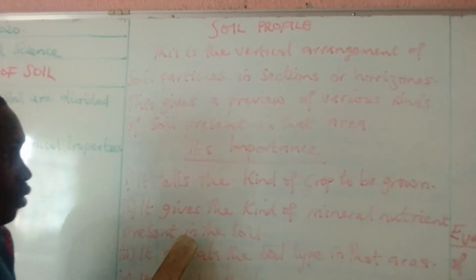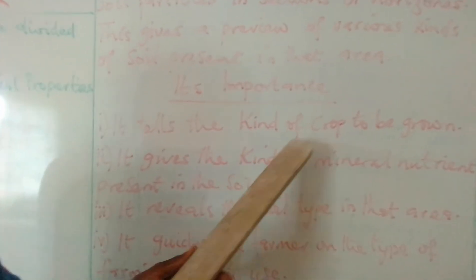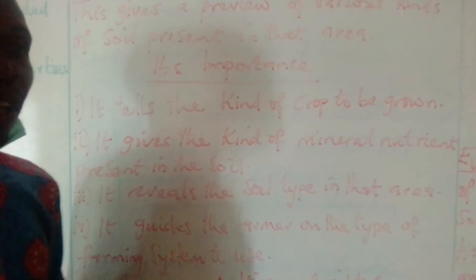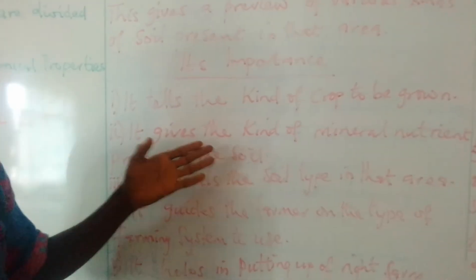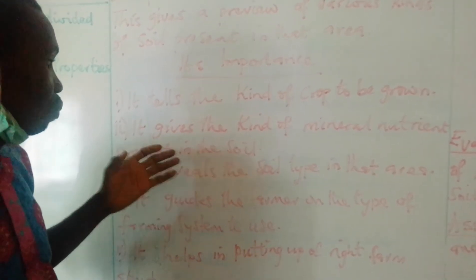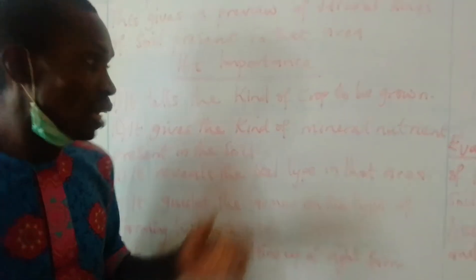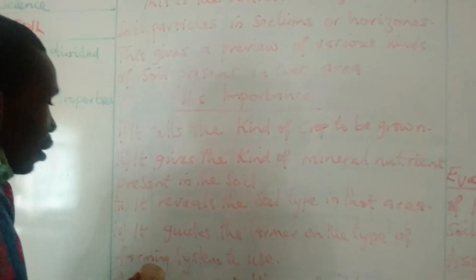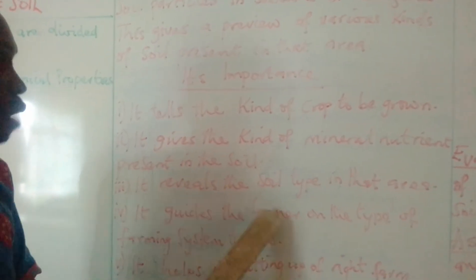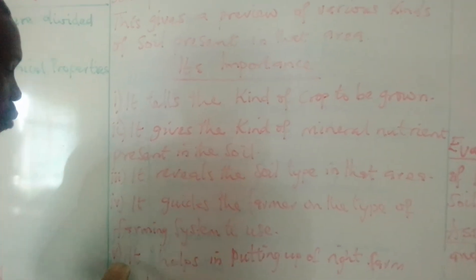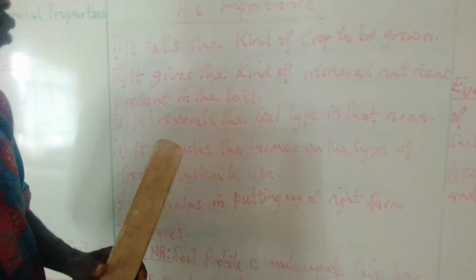What is important about soil profile? It tells you the kind of crop that should grow on a particular piece of land. It also gives you the kind of mineral nutrients present in the soil. It will tell you the soil type in that area. Number four, it guides a farmer on the type of farming system to use. And number five, it serves in putting up the right farm structures.